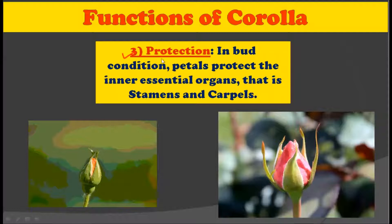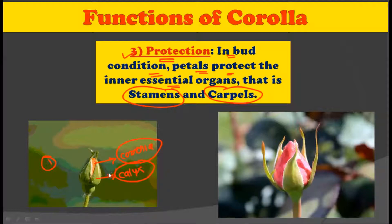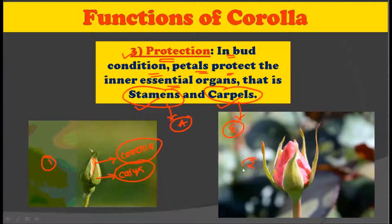The third function performed by the corolla is protection. In the bud condition, the petals protect the inner essential organs — that is, the stamens and the carpels. In the picture you can see the bud condition flower: outside is the calyx, and then the red corolla. Both calyx and corolla protect the underlying reproductive structures — the stamens (individual members of the androecium) and the carpels (individual members of the gynoecium).